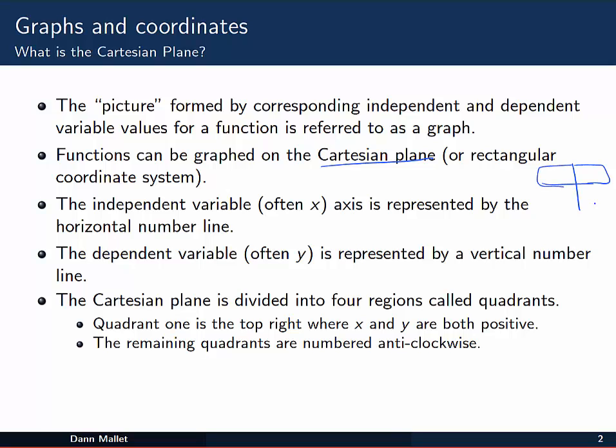The independent variable is often represented on the horizontal axis or horizontal number line. We often use x for our independent variable, and the dependent variable, which is often y, we put that on the vertical axis.